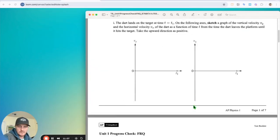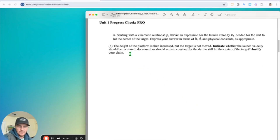So the next thing says B, the height of the platform is then increased, but the target is not moved. Indicate whether the launch velocity should be increased, decreased, or should remain constant for the dart to still hit the center of the target, justify your claim. Okay. So you can use just a verbal reasoning here, kind of a conceptual reasoning, and they'll be fine with it. You could say, if I increase the height, it's going to fly for more time. And if it's going to fly for more time, if it was at the same exact velocity, it would go further because it would have more time to fly. So you would say, since the height is bigger and flight time is going to increase as a result, the velocity, the launch velocity must reduce in order for the dart to go the same distance, D.